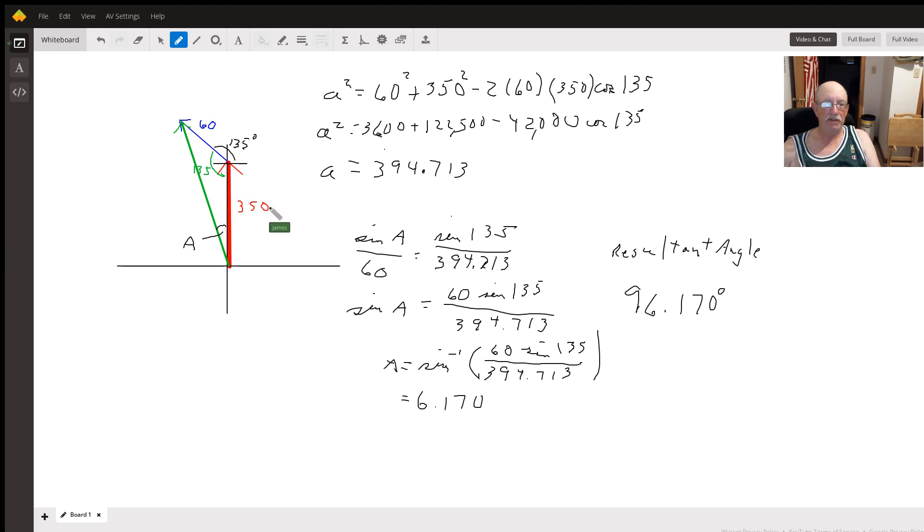So we can use the law of cosines to figure out the magnitude of the resultant. We're going to have a squared, which is our resultant, equals 60 squared plus 350 squared minus 2 times 60 times 350 times the cosine of 135.